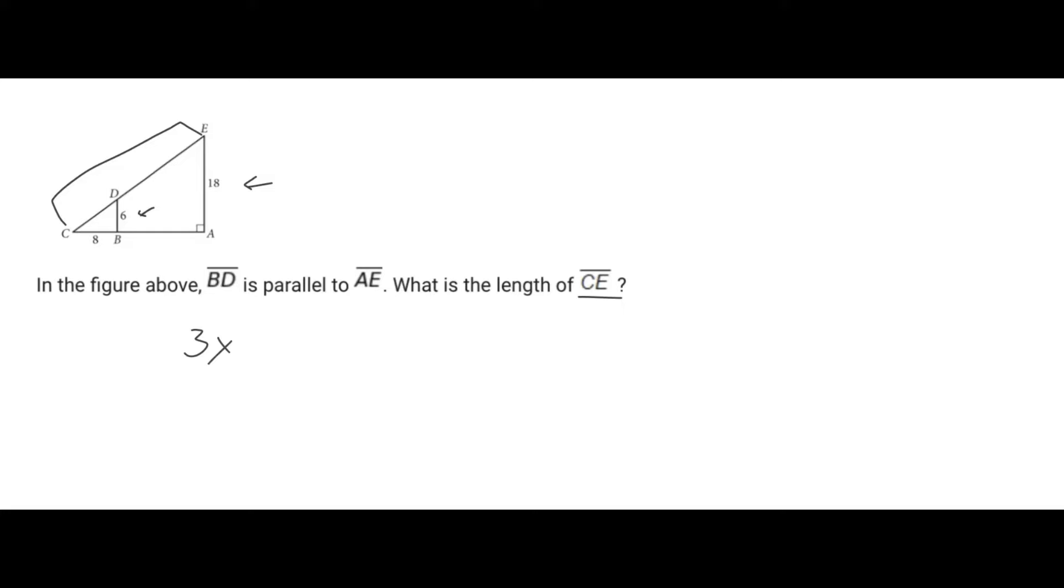And now we just want to find the missing side length CD. Because if you find that we're going to scale that up in order to find CE. So CD, well it's going to be equivalent to, we just use Pythagorean theorem. So we just say 6 squared plus 8 squared equals C squared.